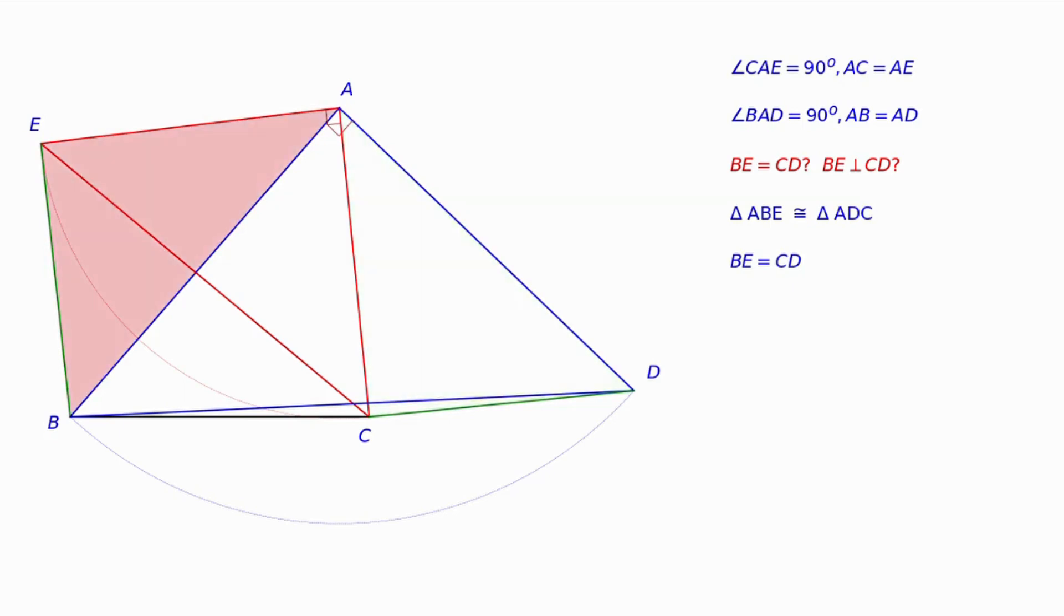To prove lines BE and CD to be perpendicular, let the lines including segments BE and CD intersect at a point called P. We need to prove that angle EPC equals 90 degrees.